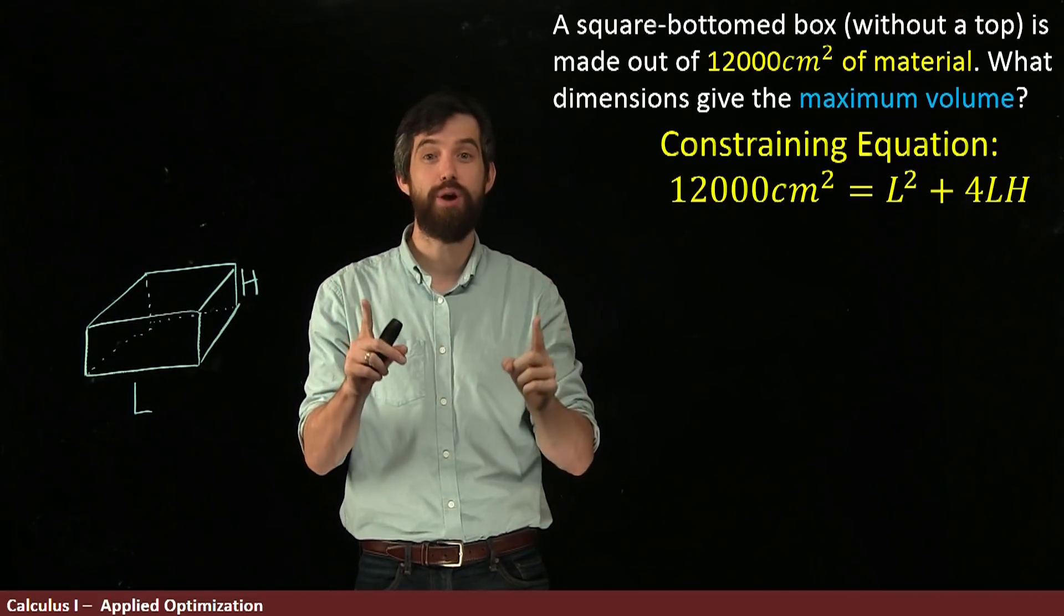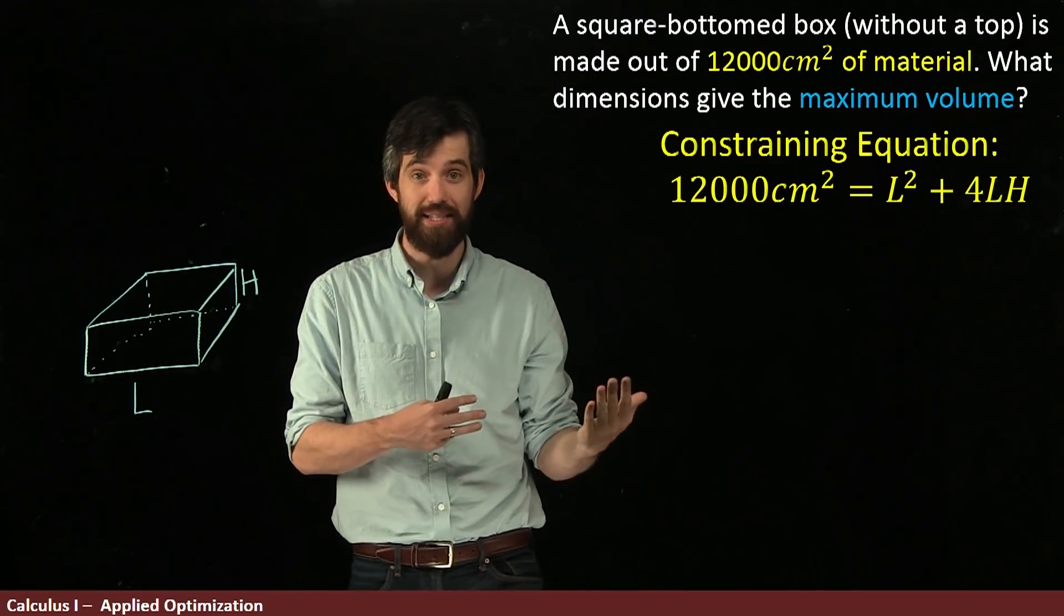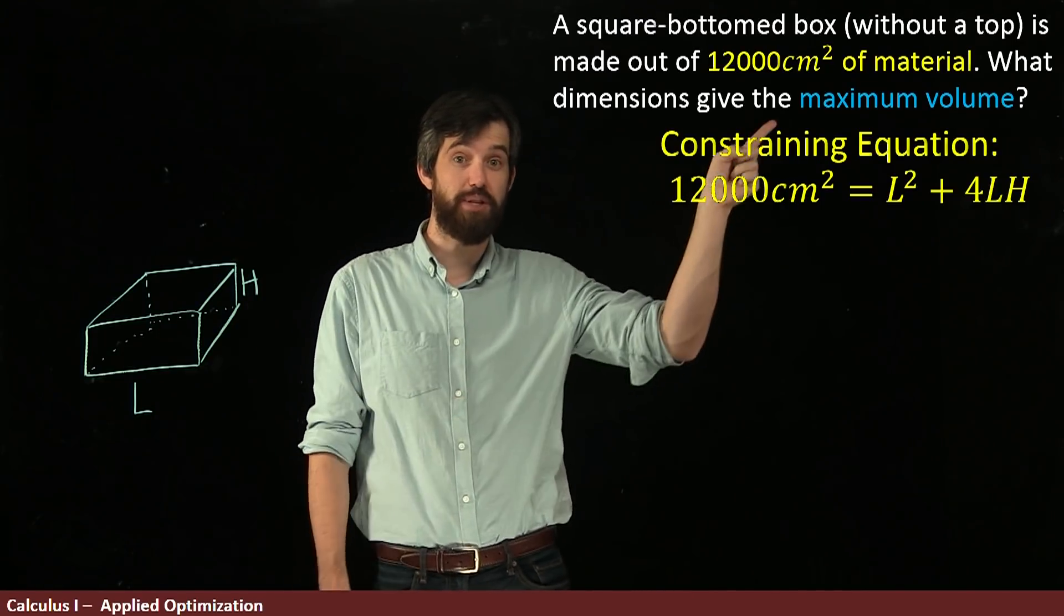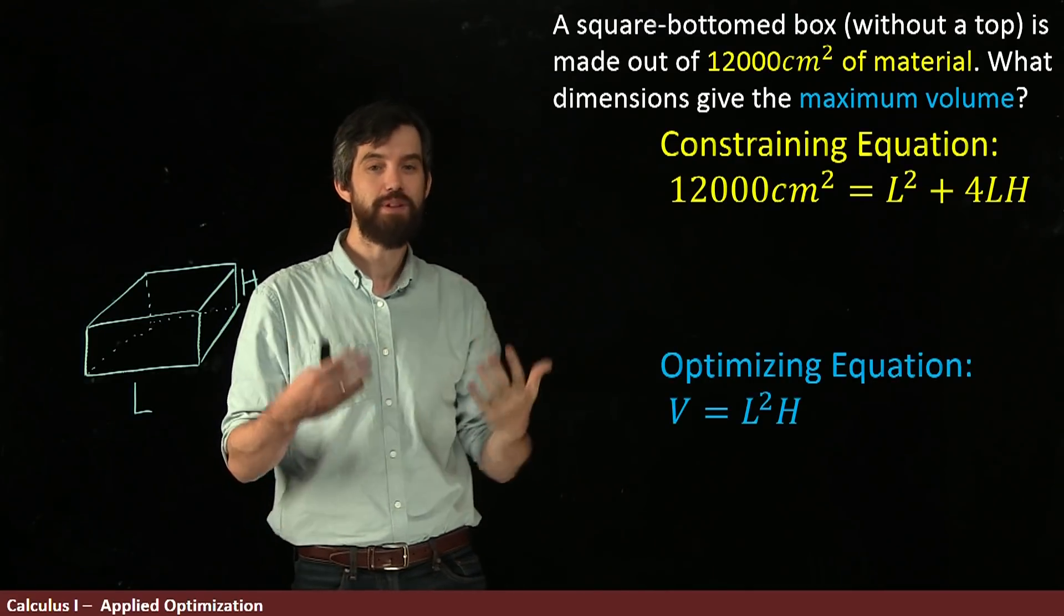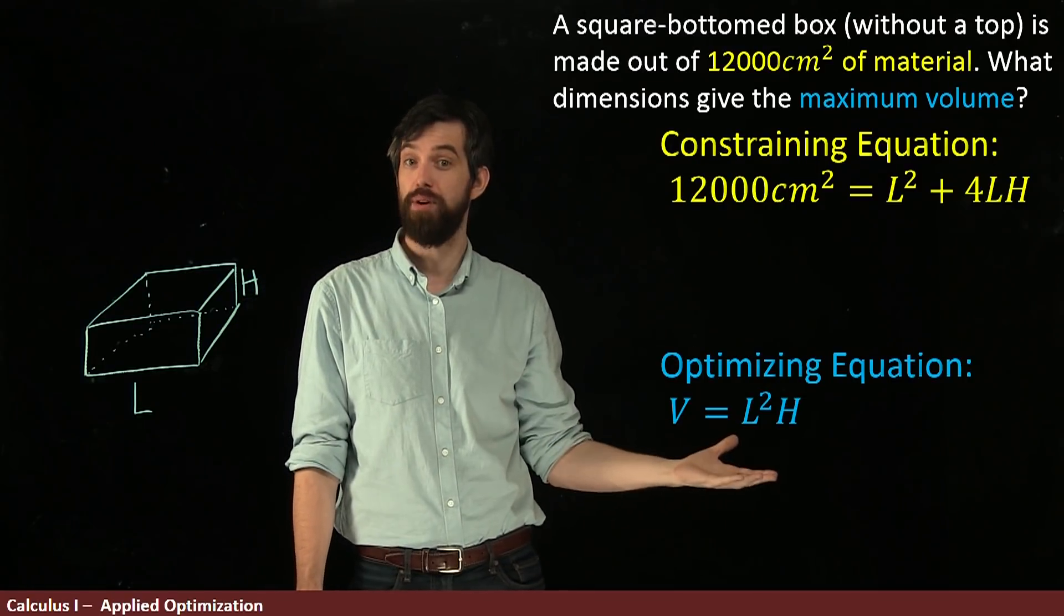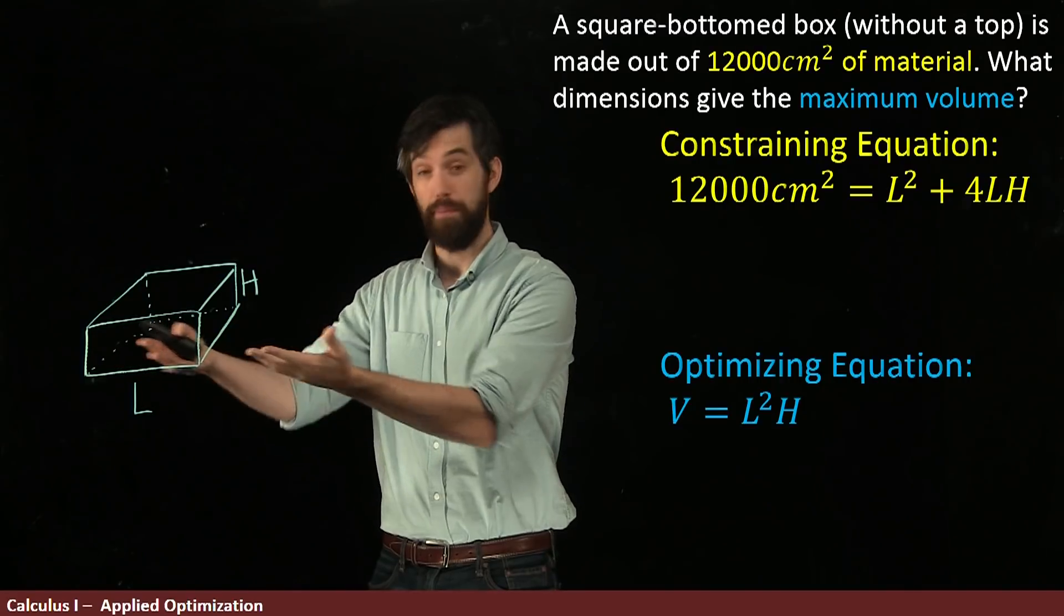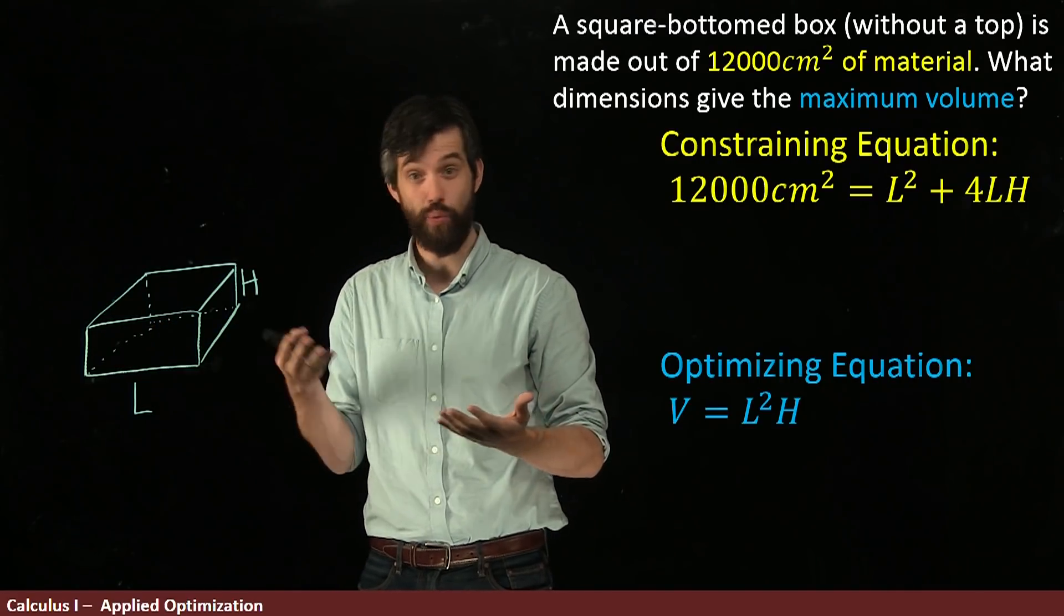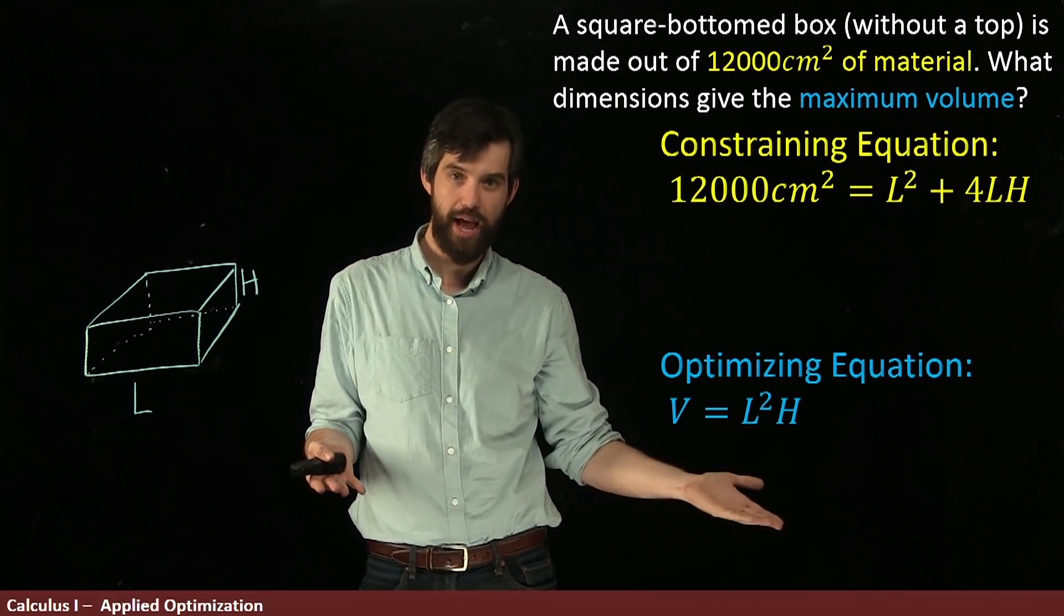Now, the next equation I want to write down is what I call my optimizing equation. Because the thing I want to optimize, the thing I want to be as large as possible is my volume. So we have a different formula for my optimizing equation. And here it is. It's the volume V = L²H. This is the volume of a box where both the base has the width and the length equal to the same thing, equal to L, and then a height H. So L squared H.